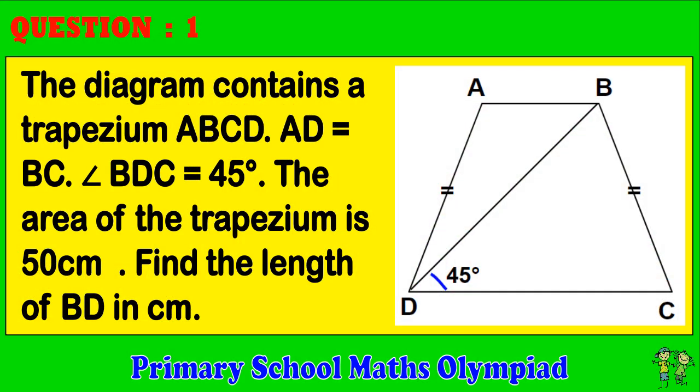Question 1. The diagram contains a trapezium ABCD. AD equals BC. Angle BDC equals 45 degrees. The area of the trapezium is 50 centimeters squared. Find the length of BD in centimeters.